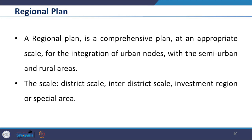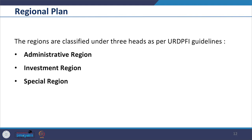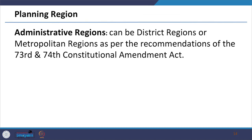The plan is based on the understanding of the characteristics of the region such as flow of people, goods, knowledge and money. For the purpose of planning, the regions are classified under three heads as per the URDPFI guidelines: the first is administrative region, second investment region, third special region. Administrative regions can be district regions or metropolitan regions as per the recommendation of the 73rd and 74th Constitutional Amendment Act.